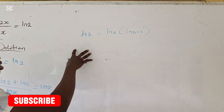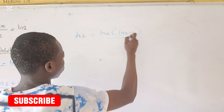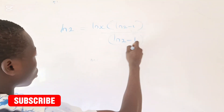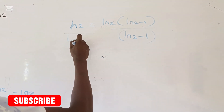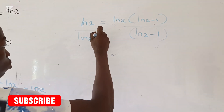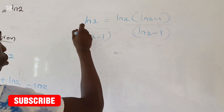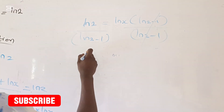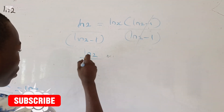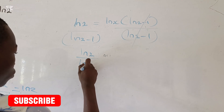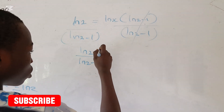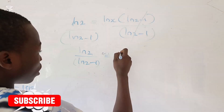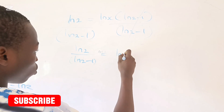So, dividing both sides by the natural log of 2 minus 1, the factor on the right-hand side cancels out. We are left with the natural log of x equals the natural log of 2 divided by the natural log of 2 minus 1.